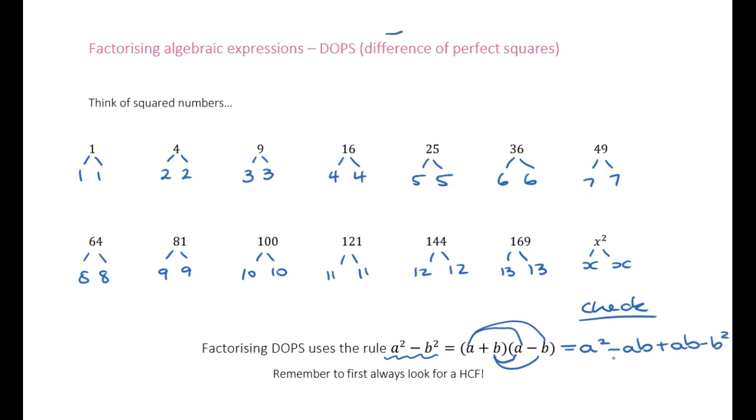Here we have minus ab plus ab, which equals zero. So what are we left with? What we started with, a squared minus b squared.